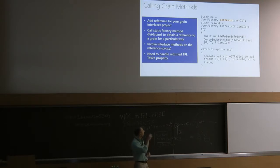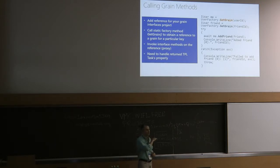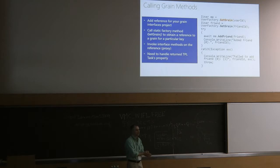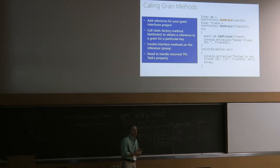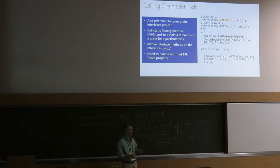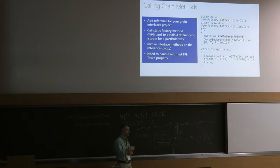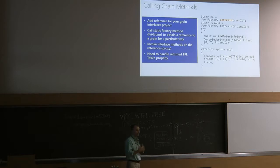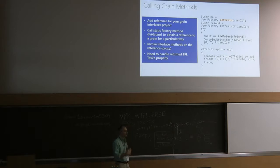Then we invoke the method addFriend on the reference to my user grain, passing the friend reference. This is where things become asynchronous because the call may be sent to another machine. My grain may not be activated yet — it may not be in memory, it may take time to be placed on a server in the cluster, it may take time to read my profile from a database. So this operation is not local — it's distributed and asynchronous.